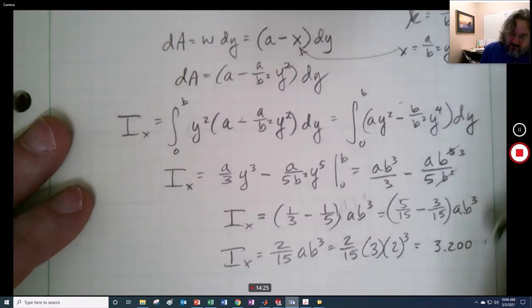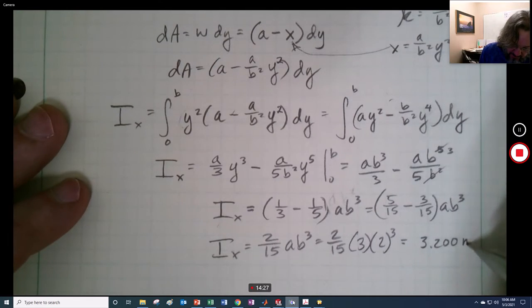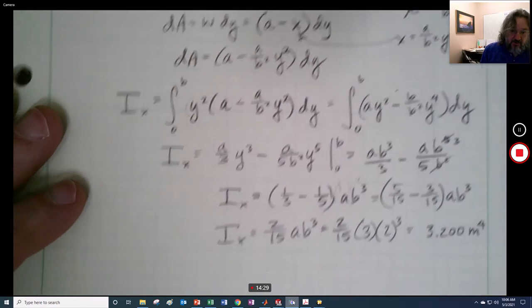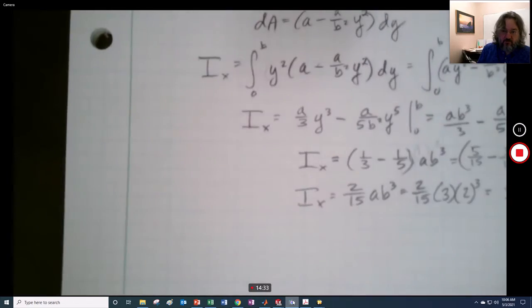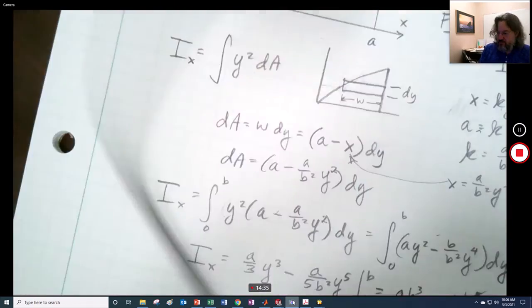And that would be a equals 3 meters, b equals 2 meters. We get 3.200 meters to the fourth. These are meters, so this thing is huge. Meters to the fourth. Right there. So that was problem 2.